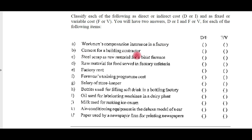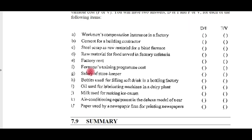Cement for a building contractor — this is direct material cost. Steel scrap as raw material for a blast furnace — this is also direct material cost. Raw material for food served in a factory cafeteria — this is a direct input, so direct cost. Factory rent — this is not related to the volume of output, so it is indirect other expense.